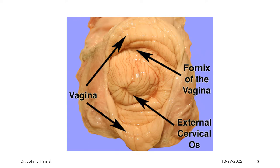When we examine the inside of the tract, particularly the vagina, we can see these structures as shown in the image. This part here represents the vagina. We also have the external cervical os and the fornix of the vagina.